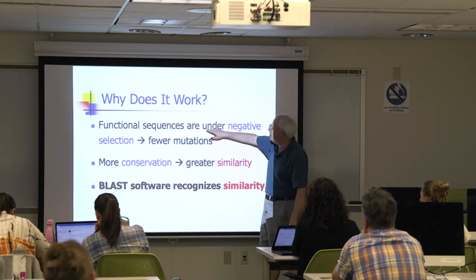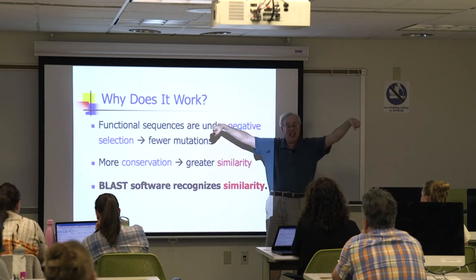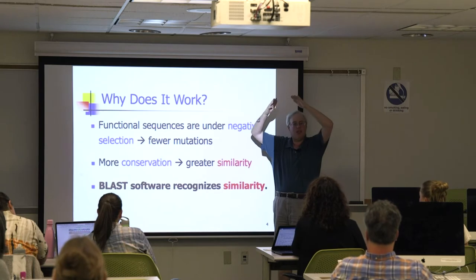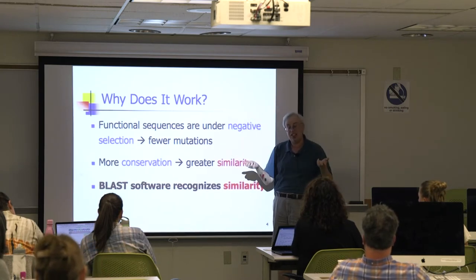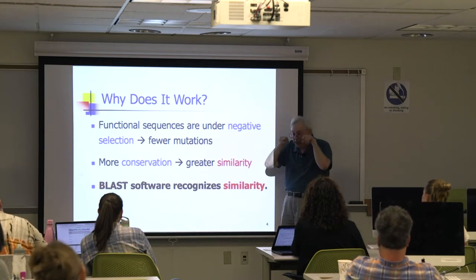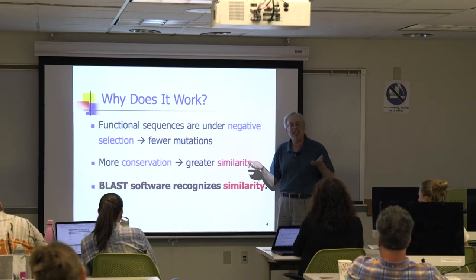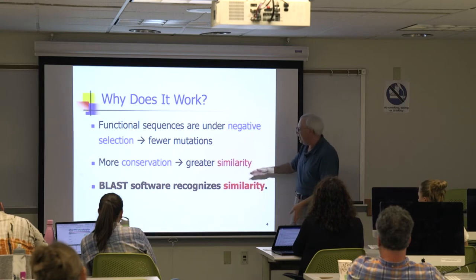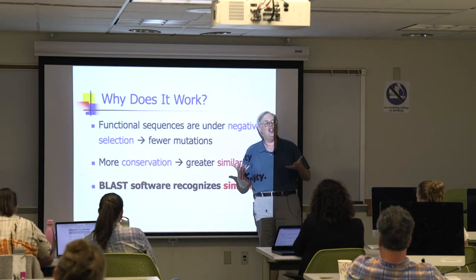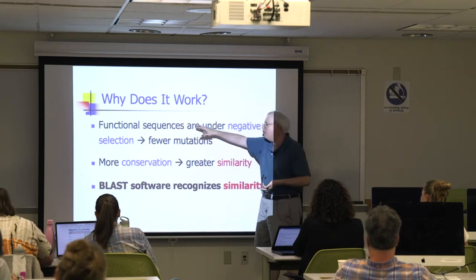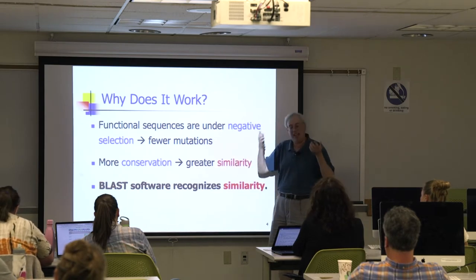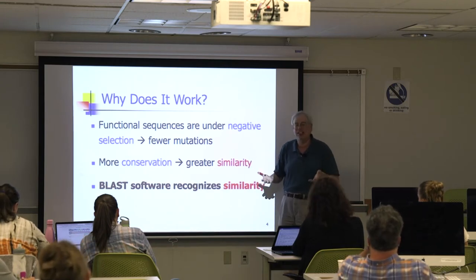If sequences are under negative selection, when we look at corresponding sequences in two different lineages, we should see conservation — most of the bases are the same as whatever the ancestral base was, because they're being preserved against mutation. Conservation is a statement about the evolutionary history of two related sequences. Then finally, if we look at those two sequences letter by letter and line them up, most of the letters are going to be the same. That's similarity — similarity is extensional, you can tell by looking. Conservation is a statement about the process that led to that. BLAST is good at recognizing similarity; that's really all BLAST knows how to do.